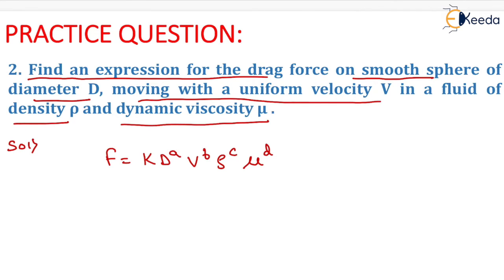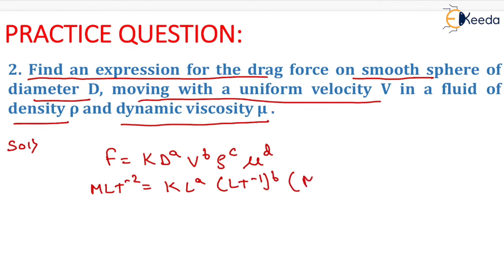We have to write the dimension formula for all the parameters. It will be: M L T minus 2 equals to K into L to the power A. The dimensions of V will be L T to the power minus 1, to the power B. For rho, it will be M L minus 3 to the power C, and for mu it will be M L minus 1 T to the power minus 1, whole to the power D.